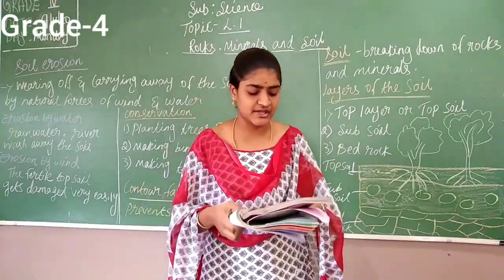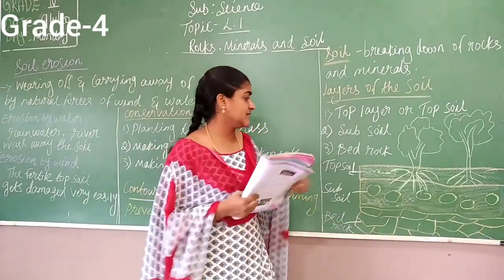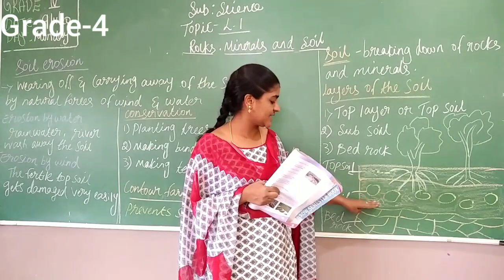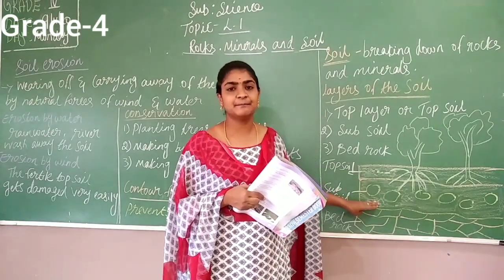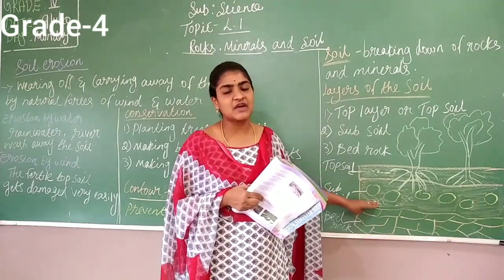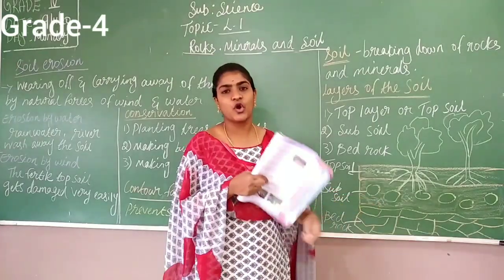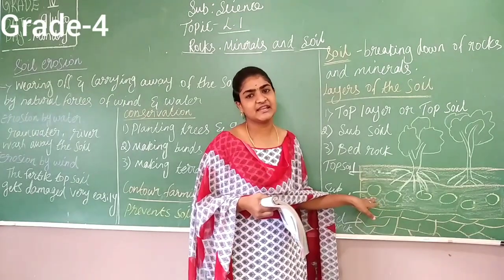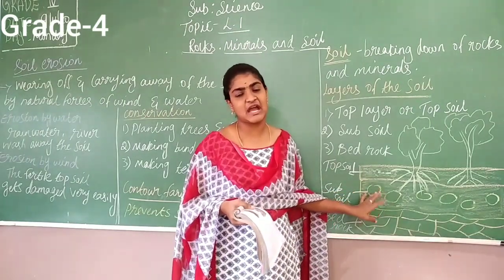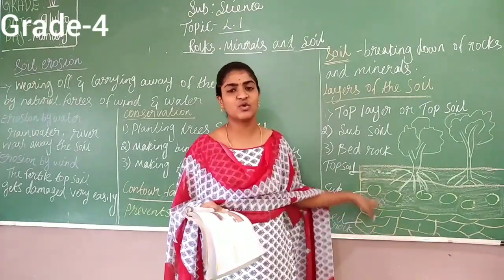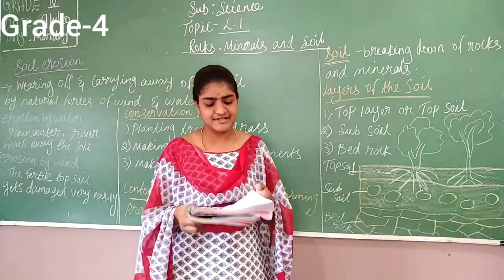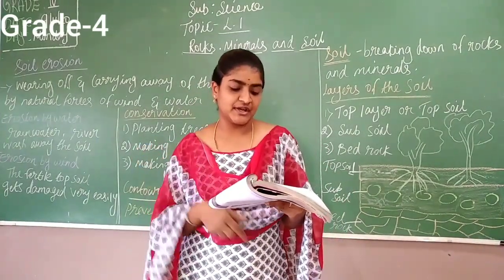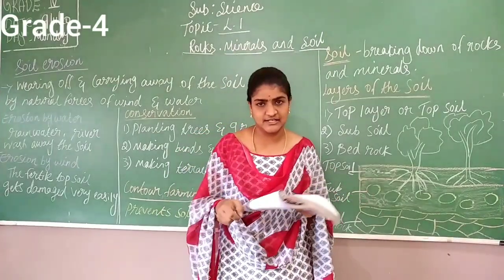Next we are going to see subsoil. What does subsoil mean? After the top layer of the soil, we can see the subsoil. It has a little amount of rock present inside. Here the fertility rate is very low — there would not be much nitrogen. This is the layer below the topsoil and it is slightly grey and red in color.